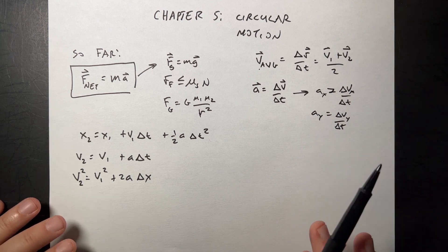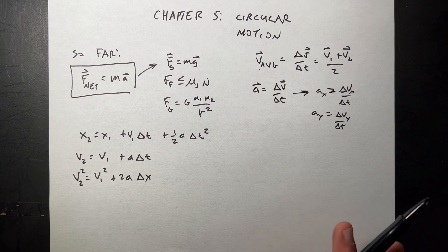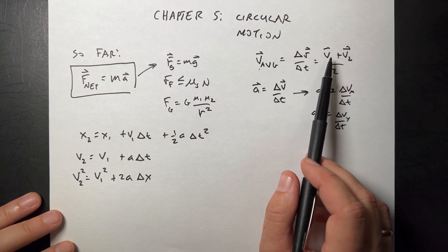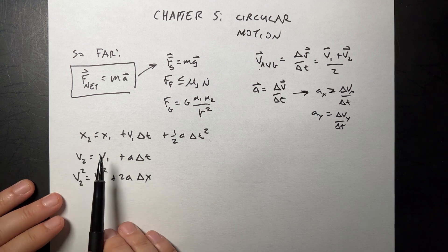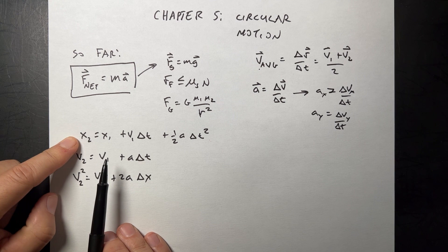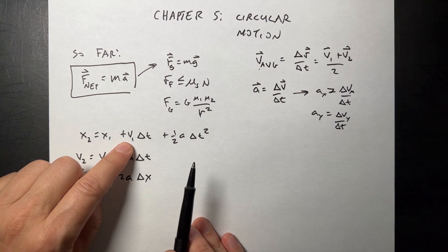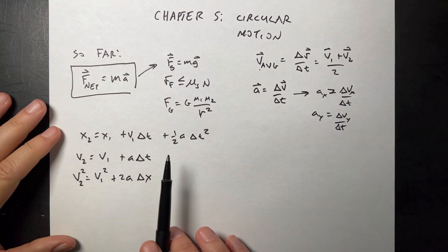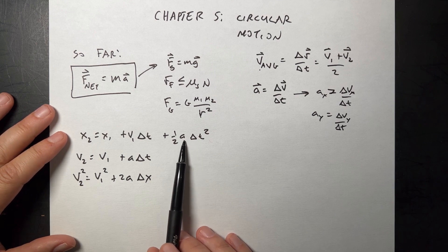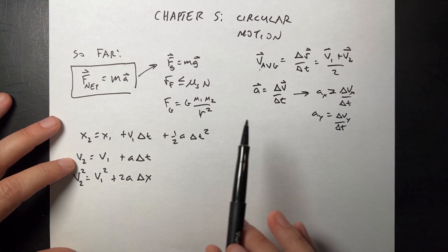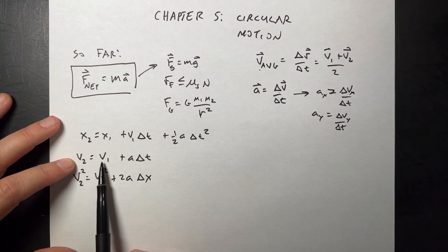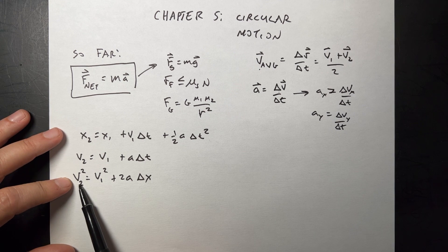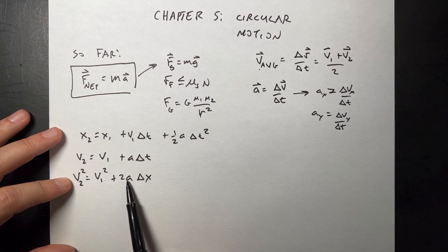We have the definition of acceleration — it's how fast the velocity changes. These are vectors, so we can write them in x and y directions: ax = Δvx/Δt and ay = Δvy/Δt. We used that in projectile motion, which is a special case of kinematics. Combining those definitions gives us the kinematic equations: the final position is the initial position plus the initial velocity times time plus one-half acceleration times t squared. The final velocity is the initial velocity plus a·Δt. And if you eliminate time, you get: final velocity squared equals initial velocity squared plus 2·a·Δx.